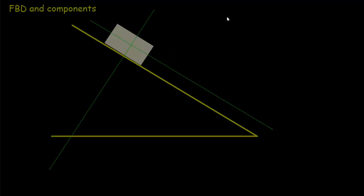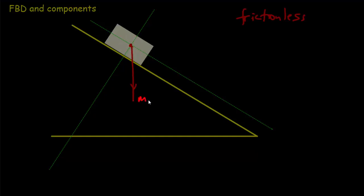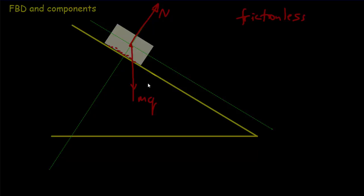Let's draw a free body diagram for the block on the incline. We'll take the simplest frictionless case — we can always add friction later. For any object on Earth we start with a vector straight down equal to the weight. The block is against a surface, so there's a normal force perpendicular to that surface. We're going to break the weight into components parallel and perpendicular to the ramp using a parallelogram method.